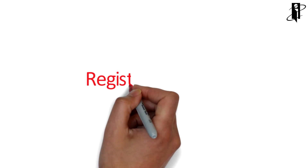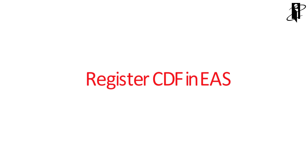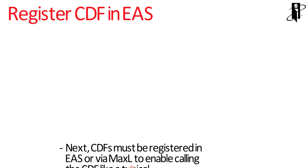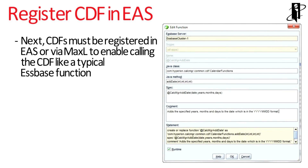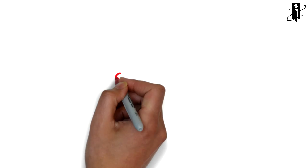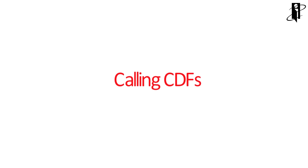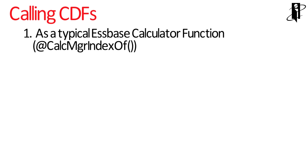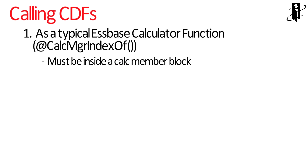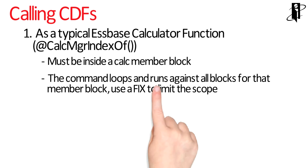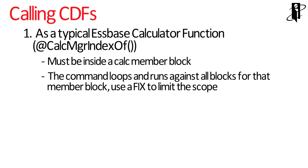Then, we register the custom defined function in S-Base Administration Services. This enables us to call the custom defined function just like a typical S-Base calculator function. When you call a custom defined function, you have two options. First, you could call it like a typical S-Base calculator function — the CDF must be placed inside of a calc member block. The command then loops and runs against all blocks for that member block.